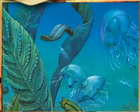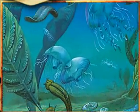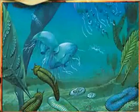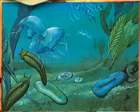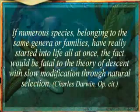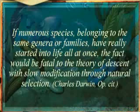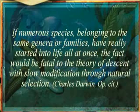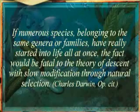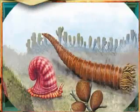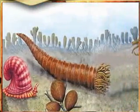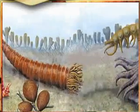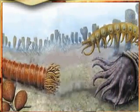This totally invalidates the theory of evolution, because in The Origin of Species, Darwin wrote: 'If numerous species belonging to the same genera or families have really started into life all at once, the fact would be fatal to the theory of descent with slow modification through natural selection.' This blow that Darwin so feared is dealt by the Cambrian period, right at the beginning of the fossil record.